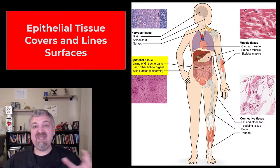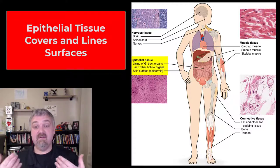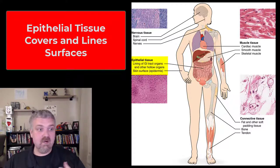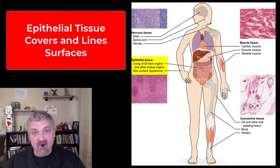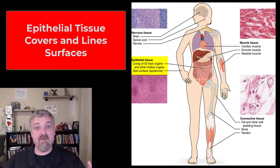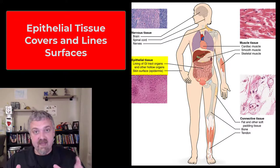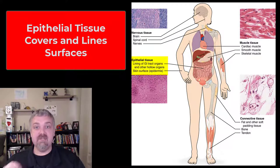But then we have internal surfaces as well. Think the lining of your blood vessels, the lining of the inside of your heart, the pericardial cavity your heart is in, the pleural cavity your lungs are in. These are all examples of surfaces, linings, and coverings, so those are going to be epithelial tissue.